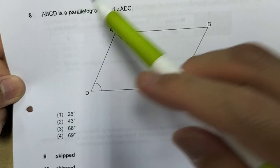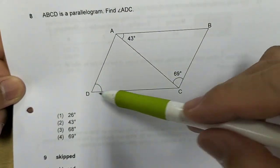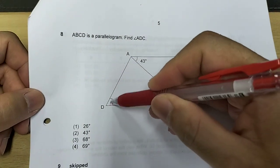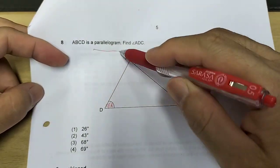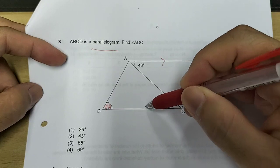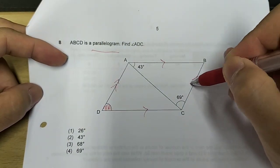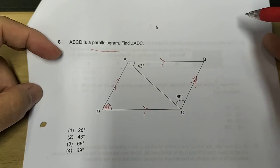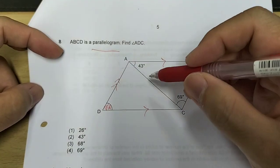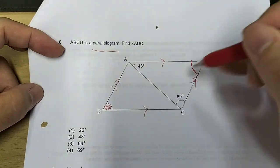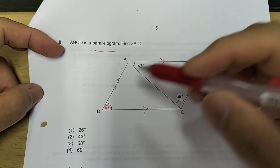ABCD is a parallelogram. Find angle ADC. So you're supposed to find the value of this angle. Now, the word parallelogram tells us these two are parallel lines. It tells us these two lines are also parallel to each other. It tells us also that opposite angles of a parallelogram are equal.